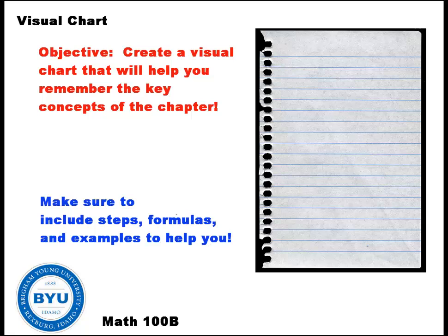So let's show you what we want you to do to create a visual chart. Visual charts can be created two ways. First of all, you can just rip out a sheet of paper, or you can do this digitally if you want to use Microsoft Word or something like that and create it on the computer. What we want you to do is divide the piece of paper up into however many sections there were in the chapter.